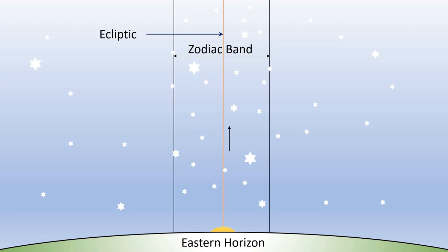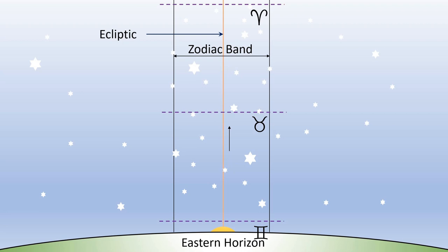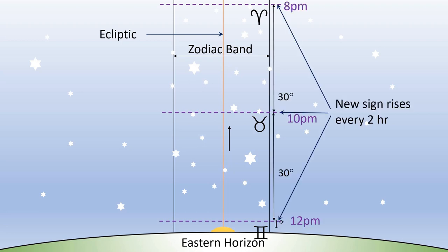I'm saying narrow as this belt is 18 degrees wide — that is, 9 degrees on either side of the ecliptic. As the Earth rotates around its axis, it gives the feeling that one after another, zodiac signs are rising from the east, going over your head, following the same route the Sun has taken. In 24 hours, all 12 zodiac signs of 30 degrees each would have risen from the eastern horizon, one after the other, with a new sign rising every two hours. Assuming Aries or Mesha has risen at 8 PM, then Taurus or Rishabha will rise at 10 PM, and Gemini or Mithuna will rise at 12 PM, and so on, as shown in the diagram.